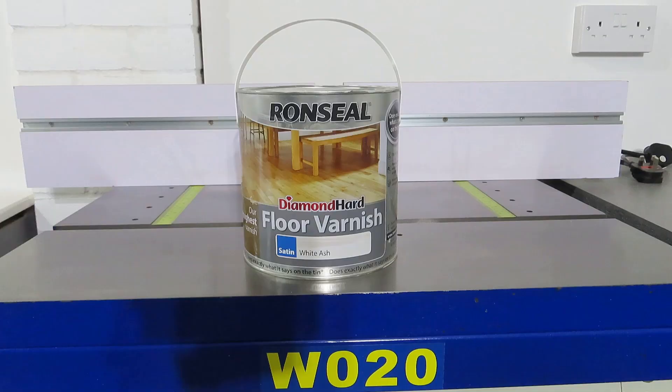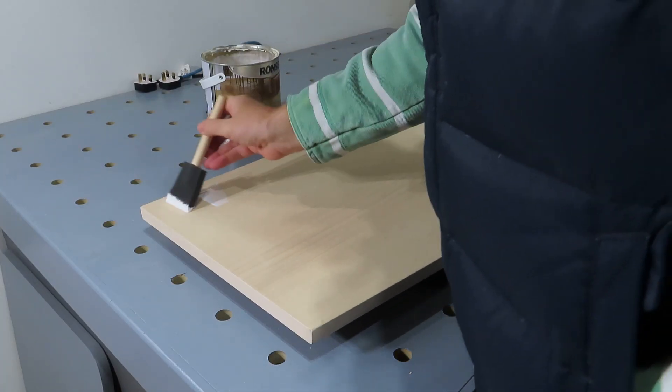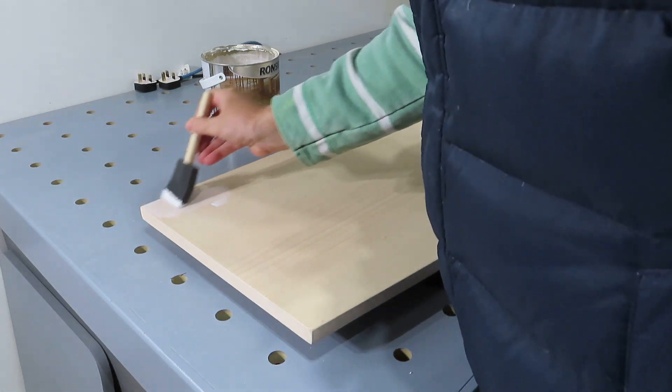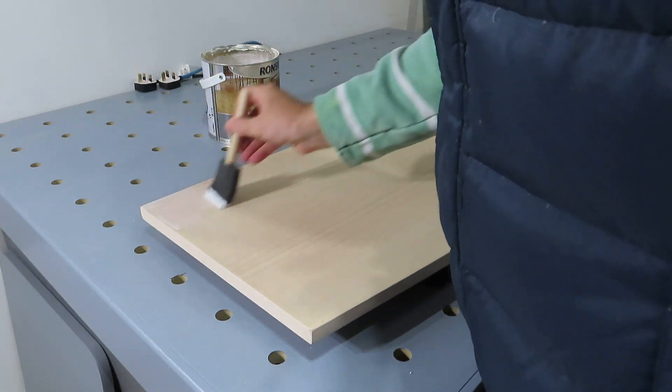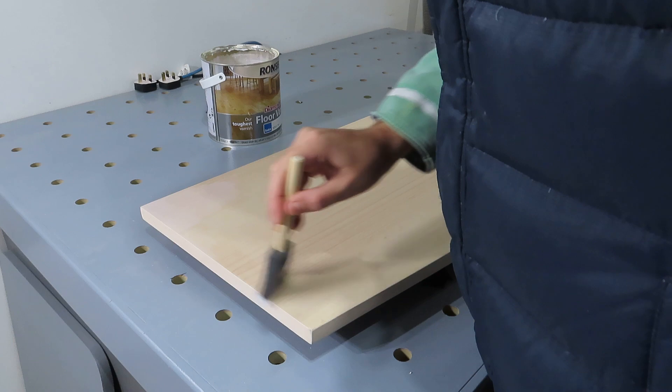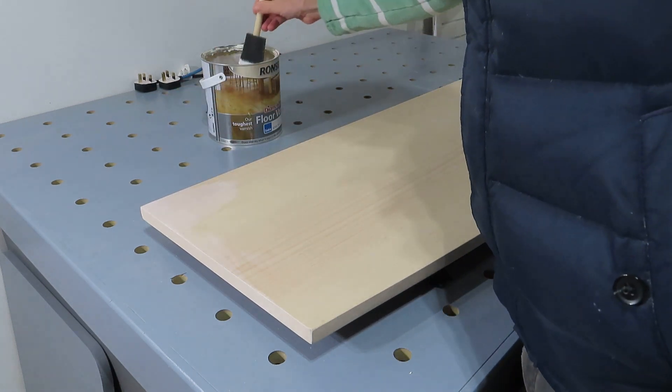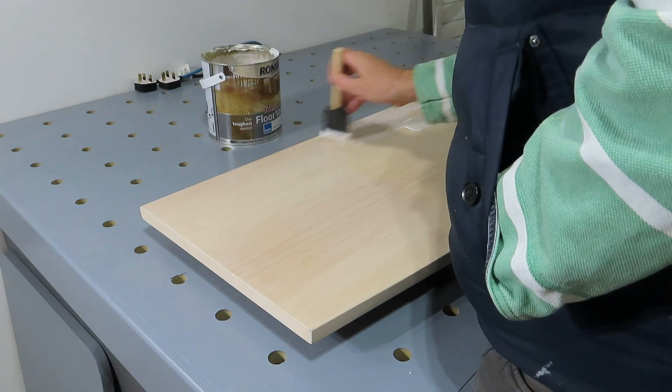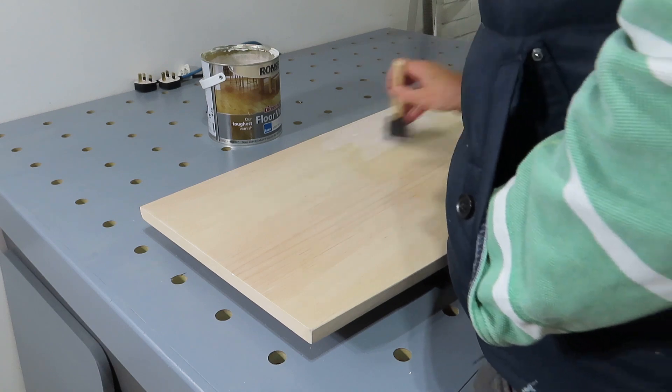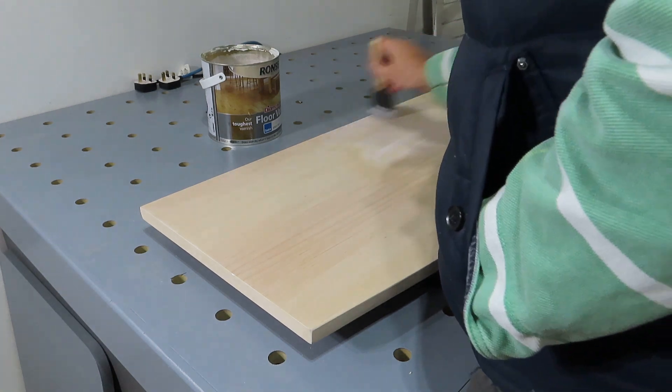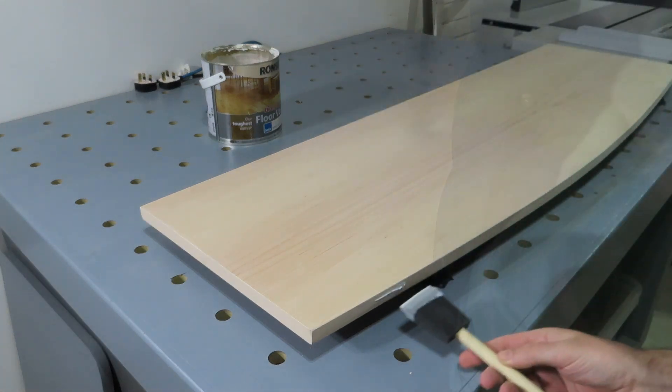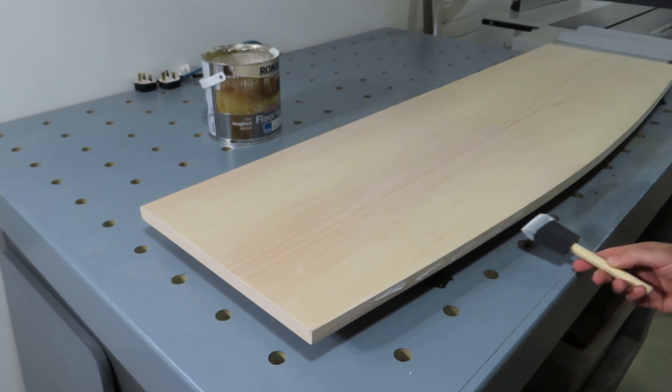Next, it was time to sort the top out. I've gone with this Ronseal diamond hard floor varnish - because you never know when somebody might want to walk across the top of your desk. It's water-based and goes on very easily, but what I really like about it is the white ash pigment. If you don't like that horrible yellowing effect you can often get with varnish, this stuff almost takes it to the opposite extreme.